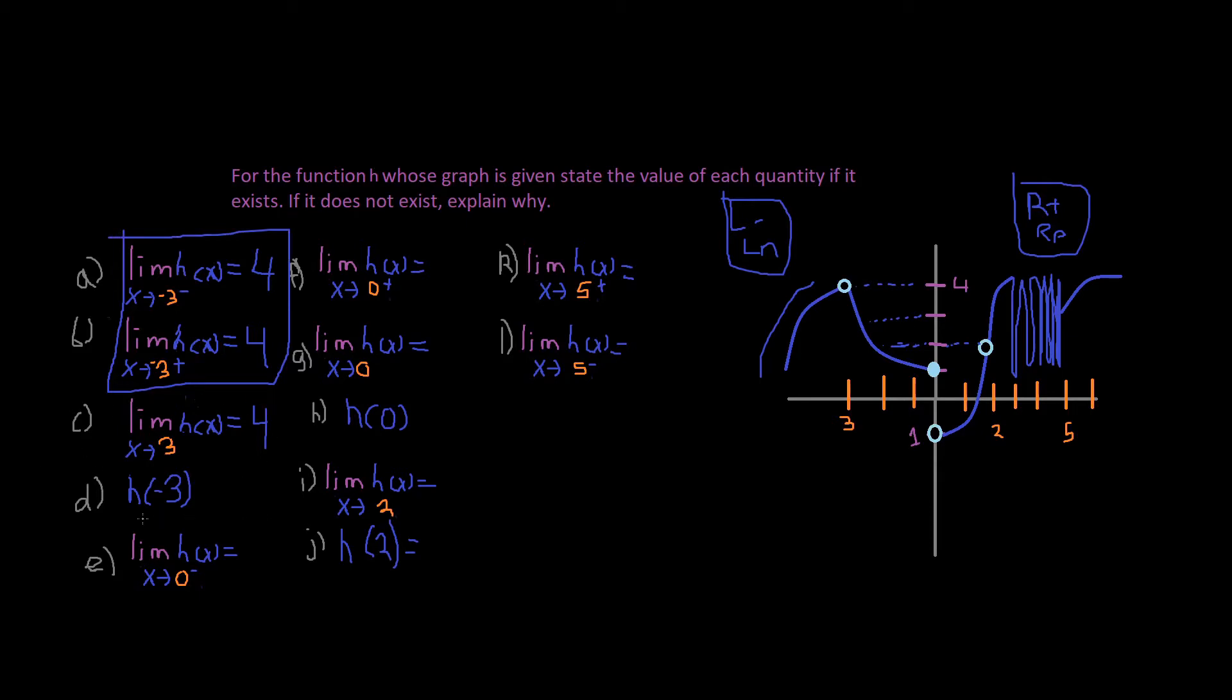Alright, so h of negative 3. This is basically h of negative 3. And so the way I always make sure I get this right, if I make a line, little dot, and you can see it's open. So then that means, what does it mean? For that given point, it does not exist. So D N E.